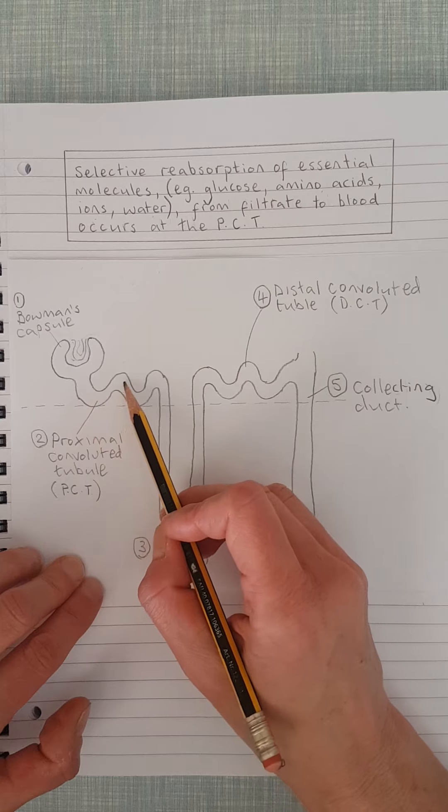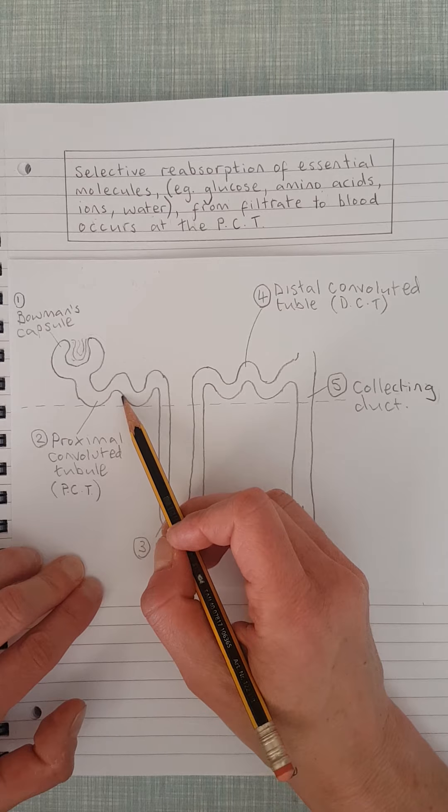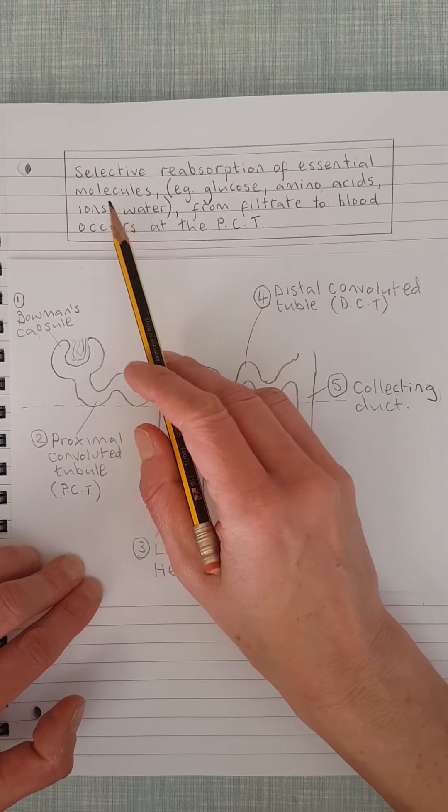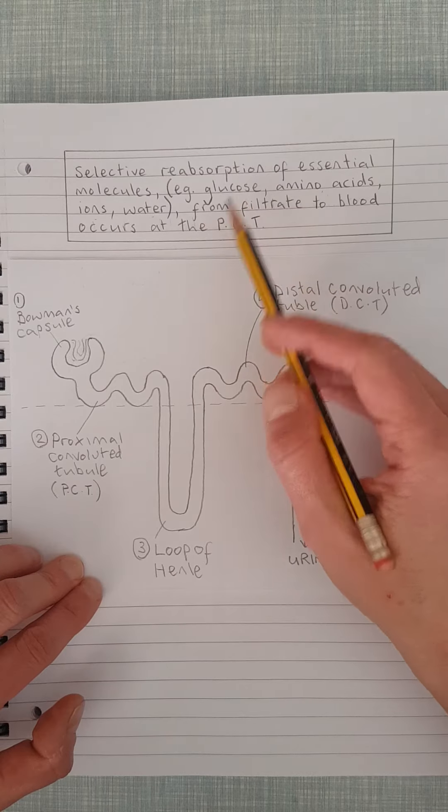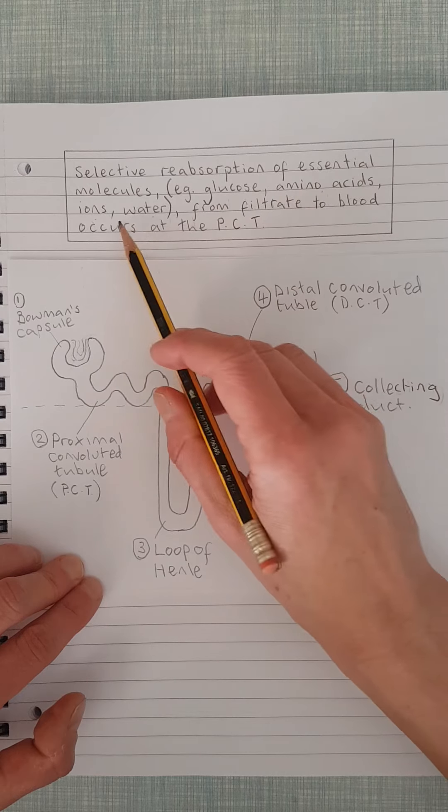And so the role of the PCT, the proximal convoluted tubule, is to get back the things that you do need. So this process is called selective reabsorption, and the kinds of things that you obviously need to get back from the filtrate are glucose, amino acids, ions, and water.